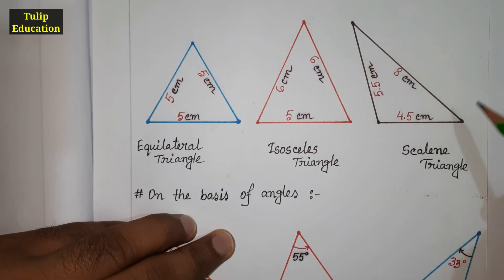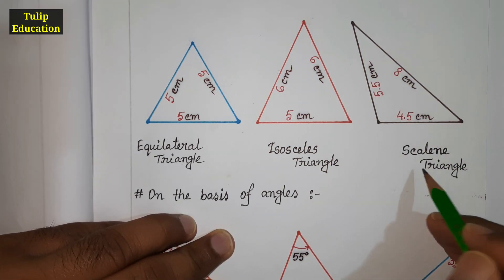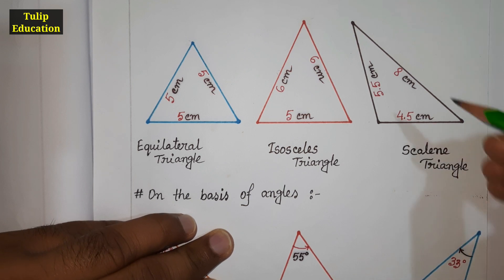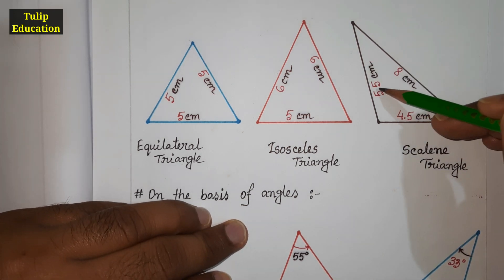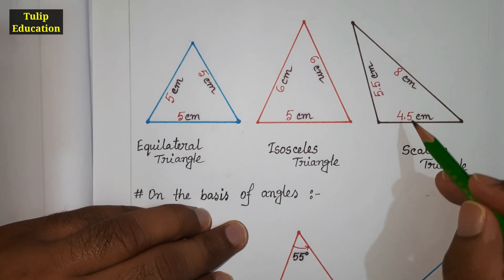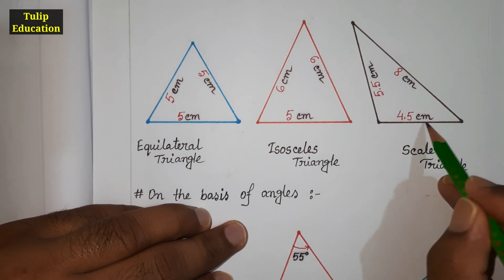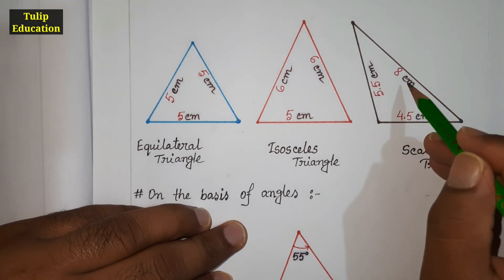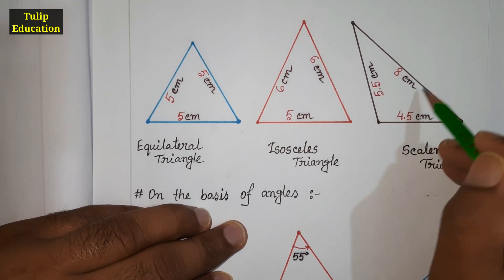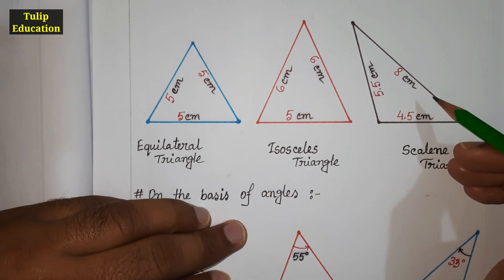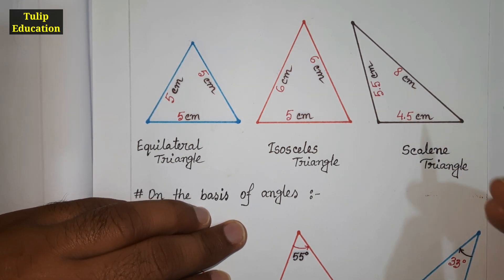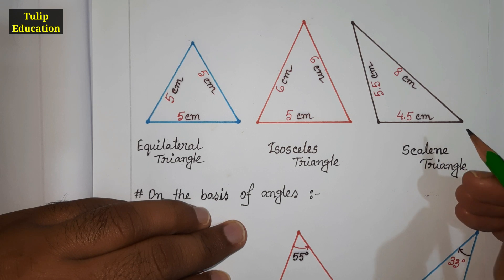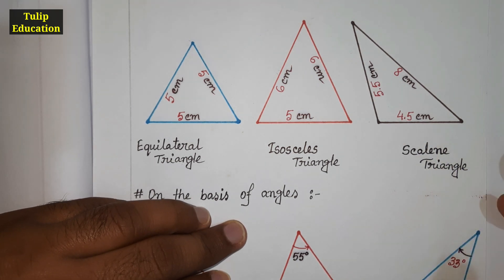If all three sides are different in length, that is a scalene triangle. You can see one side is 5.5 centimeters, another one is 4.5 centimeters, and the other side is 8 centimeters — they are all different in length, so that is called a scalene triangle.